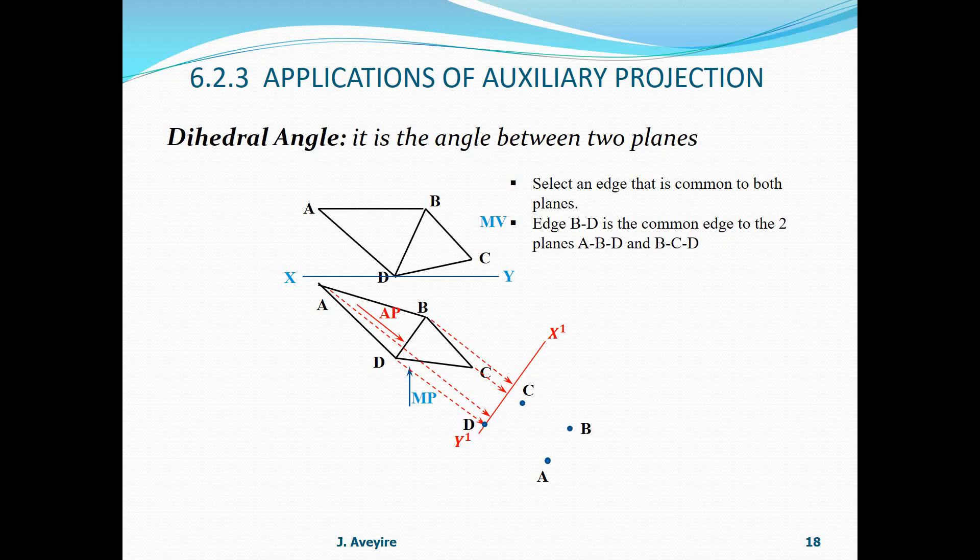Now, we need to define the edges well. We need to know our edges well. In drawing our edges, BC is one edge. CB is another edge. BA is an edge. AD is an edge. And then, we have our line BD. That is the common edge to these two triangular planes. That means we have obtained BD, which is a true length belonging to the two planes.